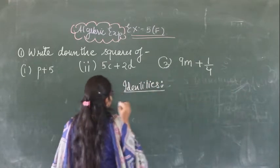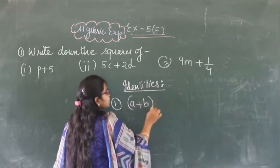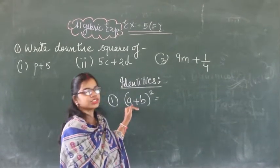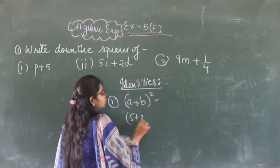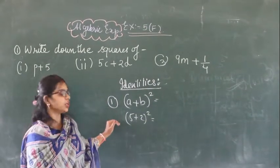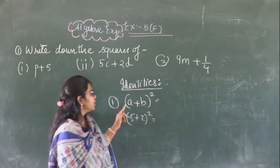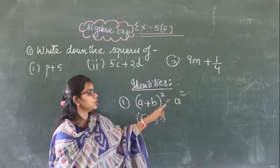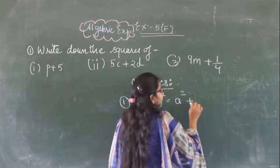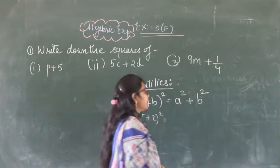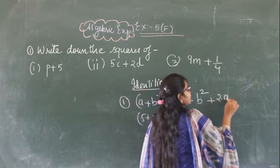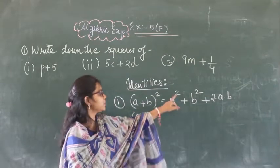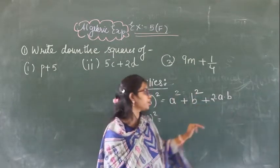The first identity is A plus B whole square. For example, if we have 5 plus 2 whole square, which formula are we going to use? A plus B whole square equals A square plus B square plus 2 into A into B.